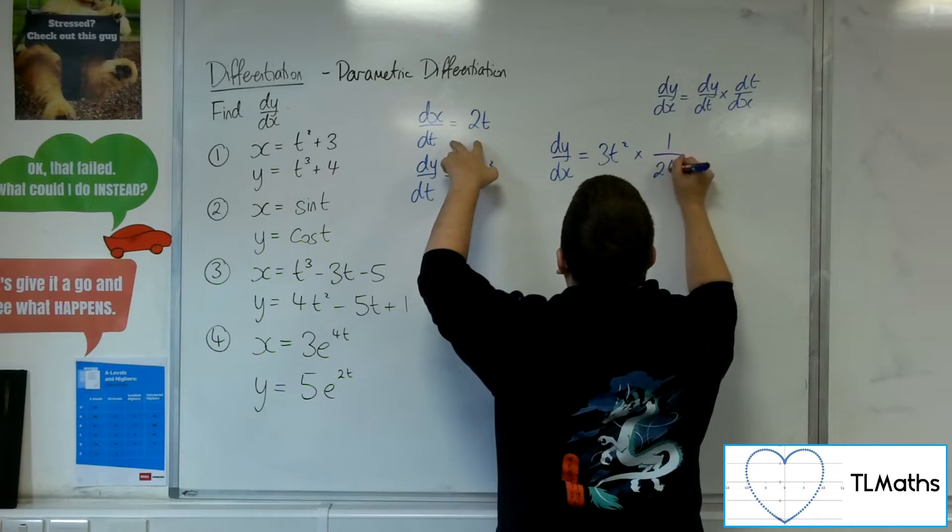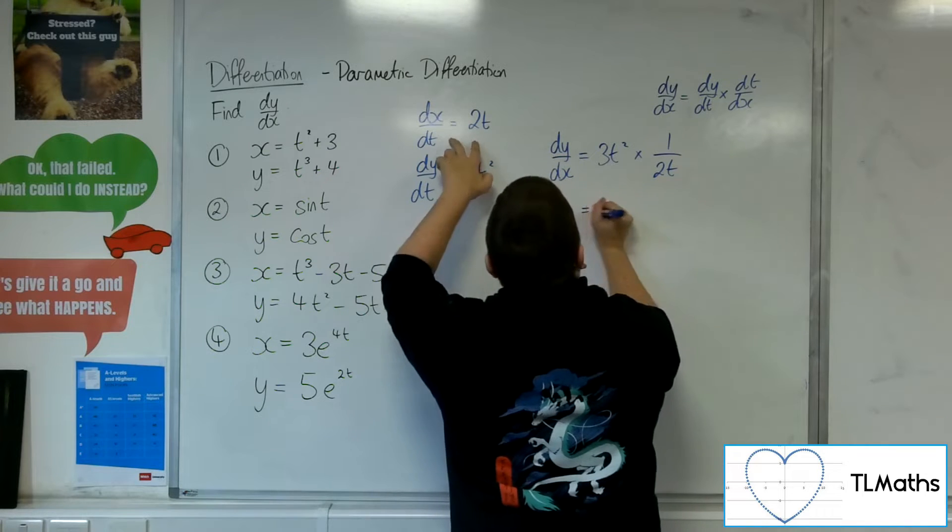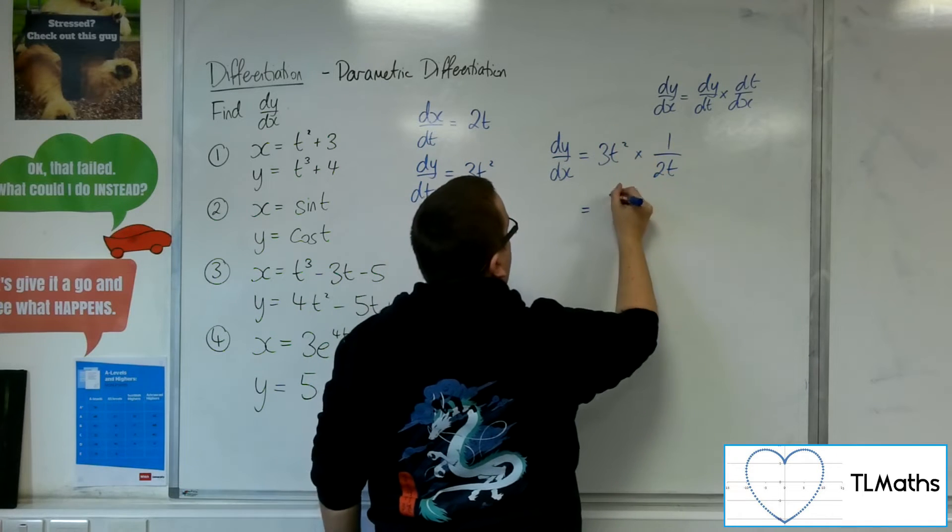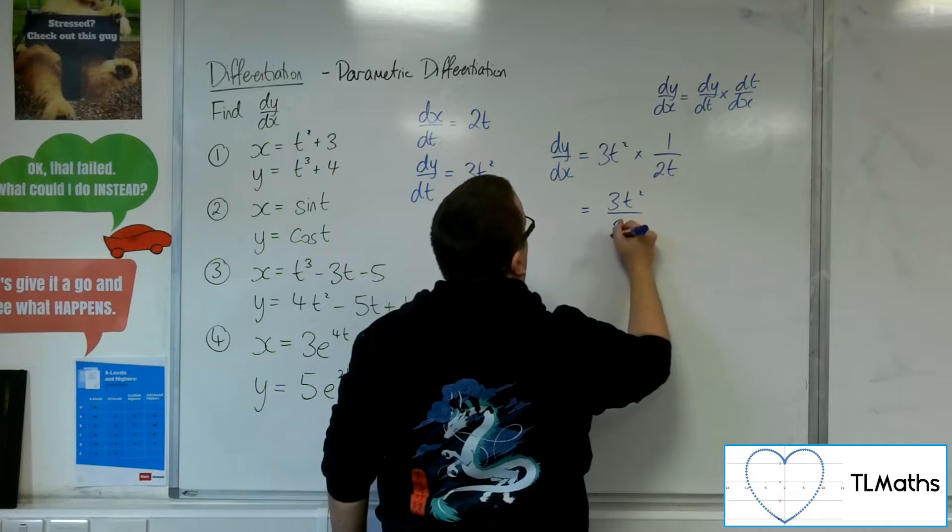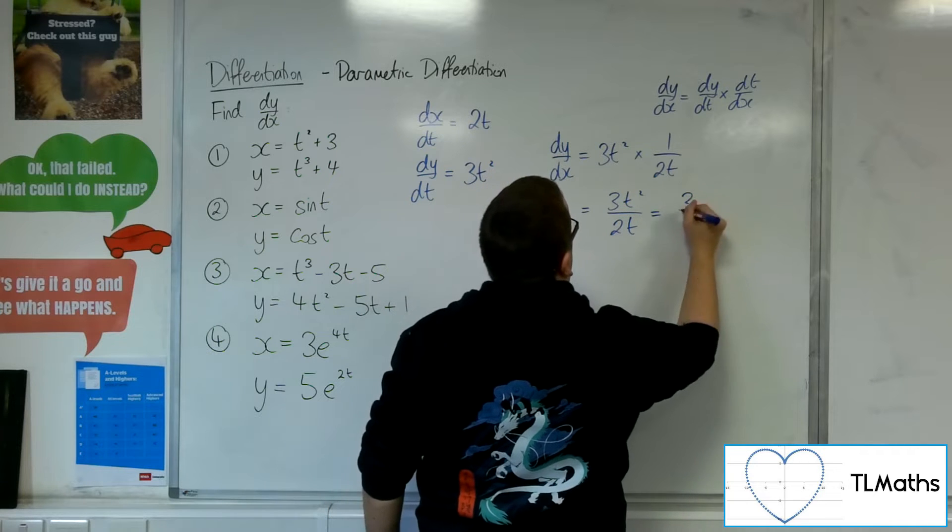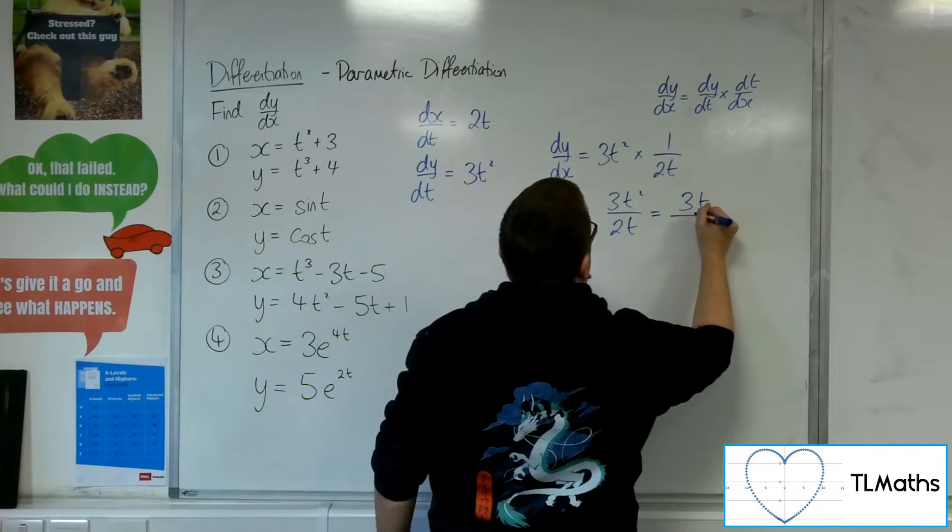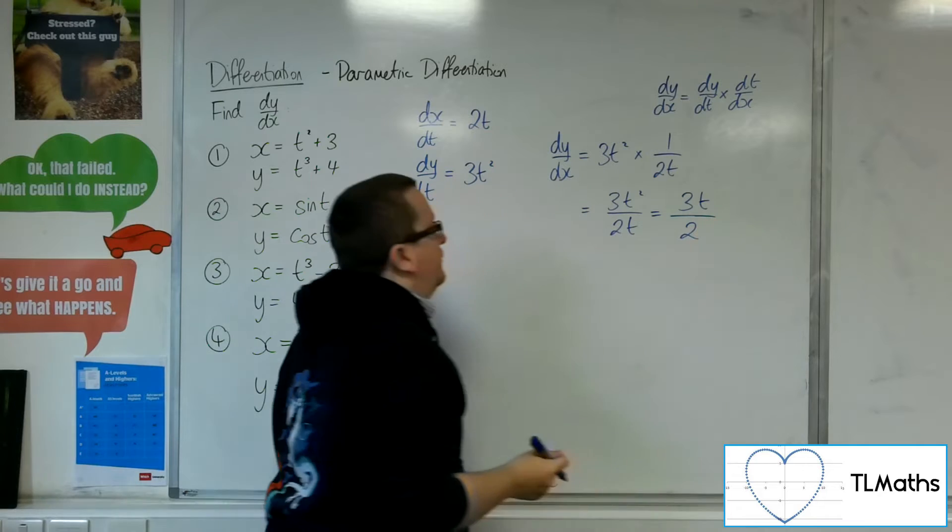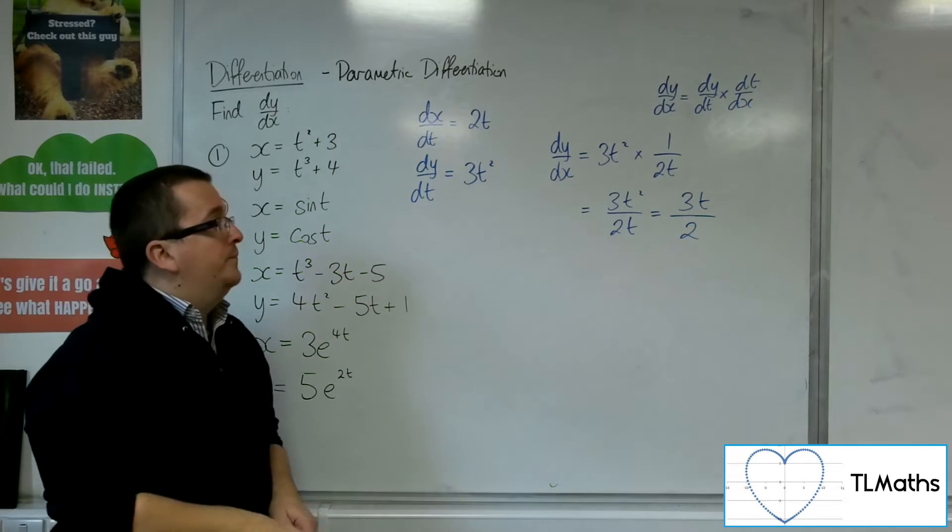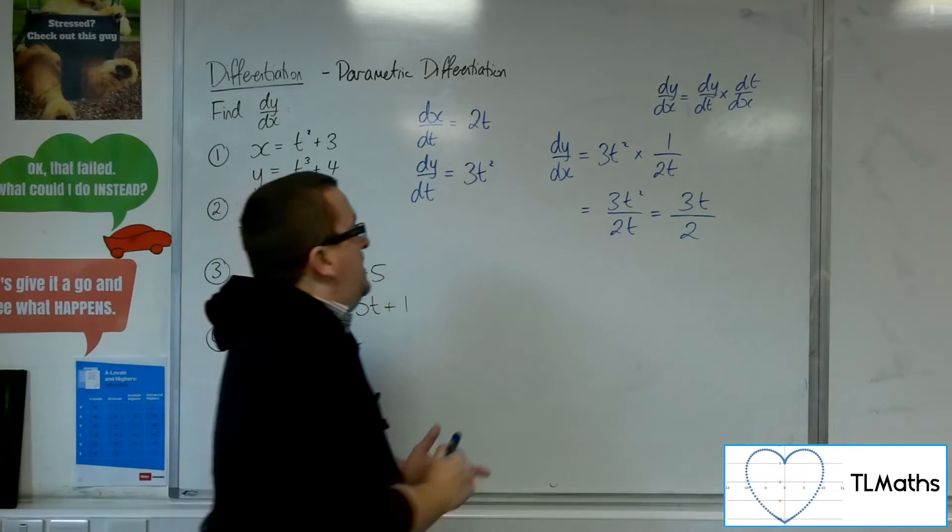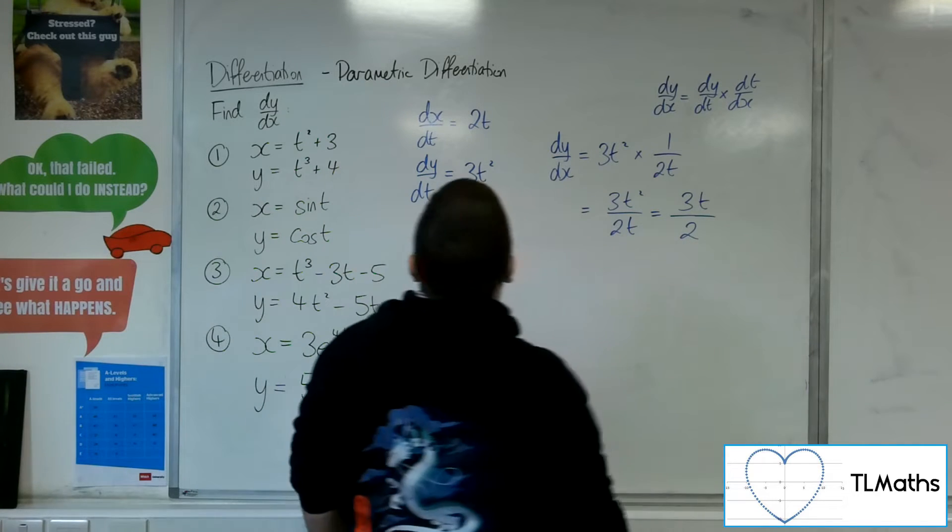So we have 3t squared over 2t, which can be simplified to 3t over 2, dividing top and bottom by t. So that is dy by dx given in terms of the parameter t.